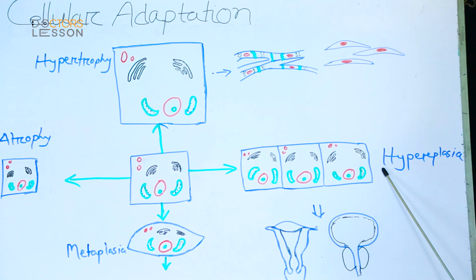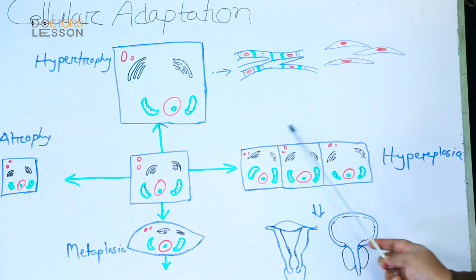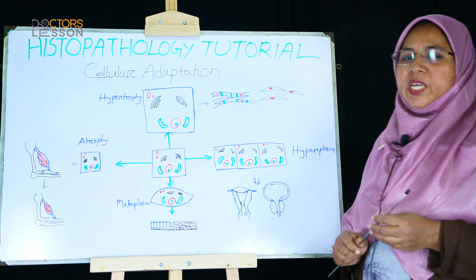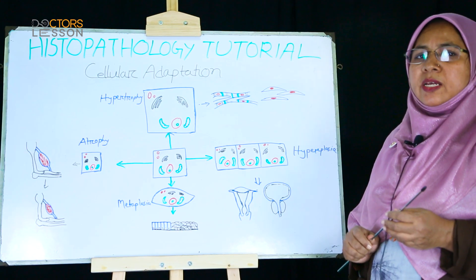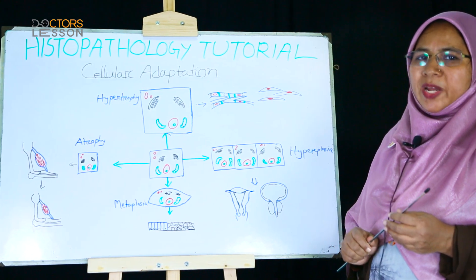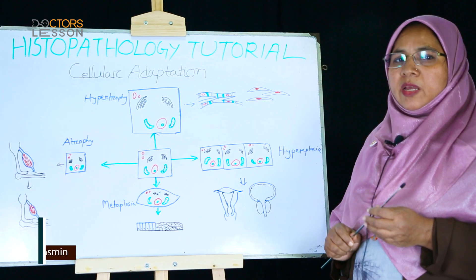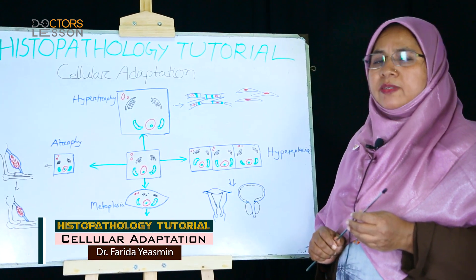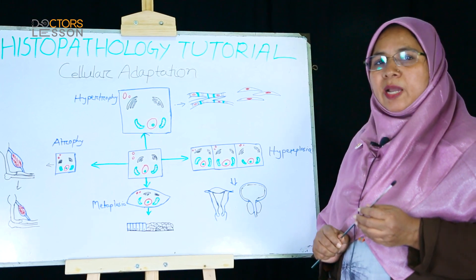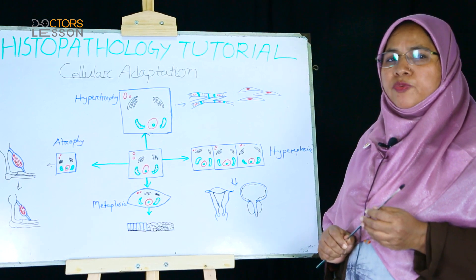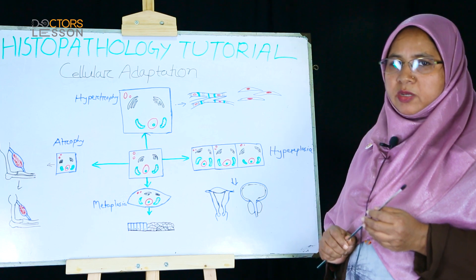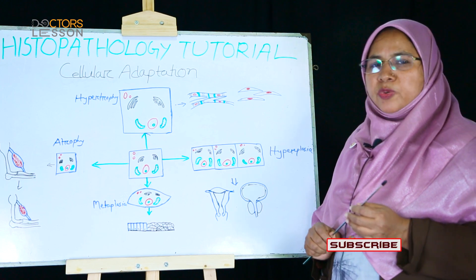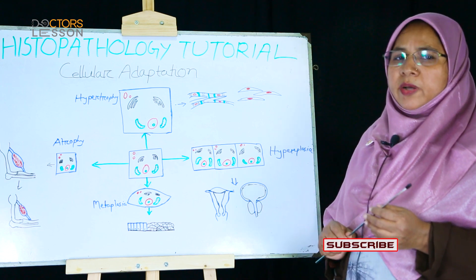Another adaptive change is hyperplasia, which refers to increased number of cells of an organ or tissue. Hyperplasia is mainly found in labile cells — that is, cells which are capable of mitotic division — such as epidermis of skin, epithelium of the GI tract, and hemopoietic cells. Like hypertrophy, hyperplasia is also caused by growth factor and hormonal stimulation. Stem cell activation, which leads to increased output of new cells, is another cause of hyperplasia.